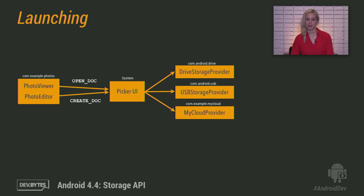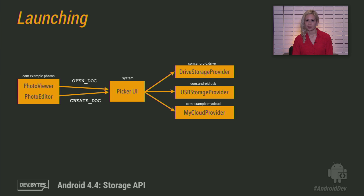Here's a quick picture of the flow. As you can see, document providers and clients don't interact directly, just as before. A client requests permission to interact with files — read, edit, create, et cetera. The system picker goes to each registered provider and shows the user the matching content. Finally, the user selects a document, and the system grants the client app permissions just for that URI.